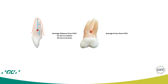On average, the center of resistance for the incisor is about 10 mm from the center of the crown, located one third of the root length from the cementoenamel junction in the apical direction. For molars, it is at the level of the furcation, which is on average about 8 mm from the center of the crown.